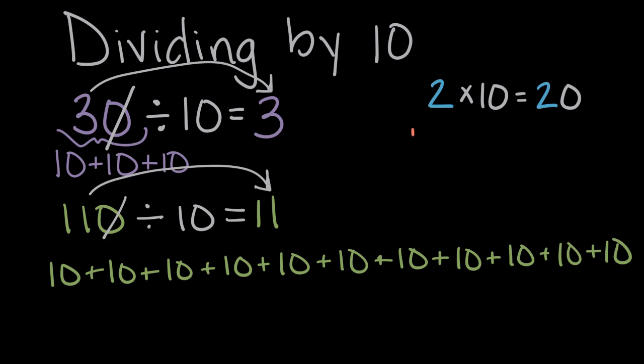Remembering another one, something like 13 times 10, our product, our solution is 13, the original number, with a zero added to the end. So in multiplication, when we multiply by 10, we add a zero to our whole number at the end. And when we divide, when we do the opposite by 10, we take off a zero from the end of our whole number.